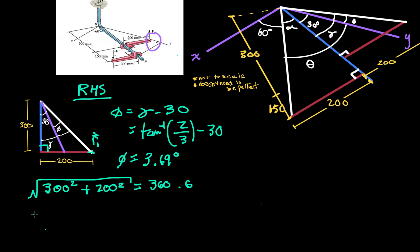300 squared plus 200 squared gives me 360.6 as my hypotenuse. And so then I can write R1, R1 equals curly brackets. And then I'm going to include a negative here for my i direction because we are in the negative x plane, negative xy plane here. And so I'm going to include a negative 360.6 sine of my angle phi, which is 3.69.